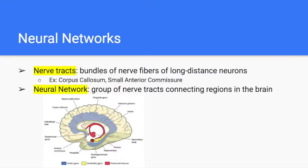Nerve tracts are bundles of nerve fibers of long-distance neurons. Examples of nerve tracts include the corpus callosum, which connects the left and right hemispheres of the brain, and the small anterior commissure, which connects the left and right temporal lobes.